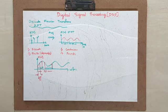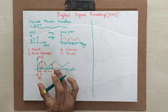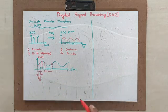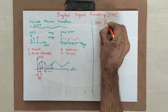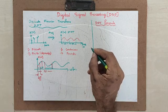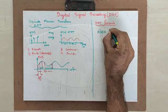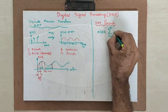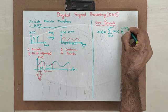Now let us derive the DFT formula — this is very important. X of omega is given by the summation from n equals 0 to N minus 1 of x(n) times e raised to minus j·omega·n.